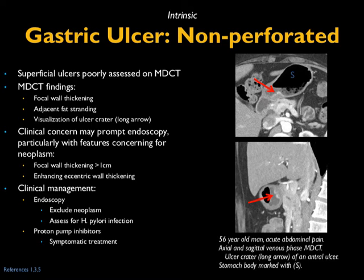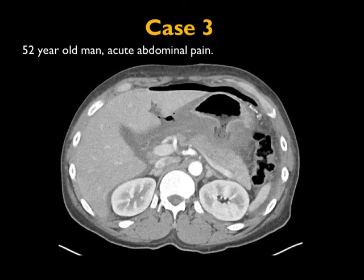You see focal wall thickening, minimal adjacent fat stranding, and you can see the ulcer crater in this case. Patients will typically get endoscopy, particularly if there's any suspicion of neoplasm. Clinical management involves excluding neoplasm, assessing for H. pylori infection, and typically placing patients on drug therapy with proton pump inhibitors.